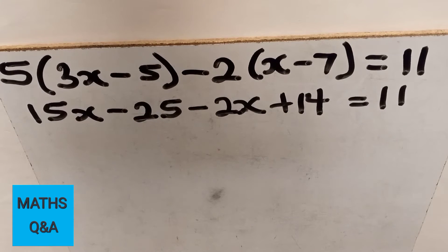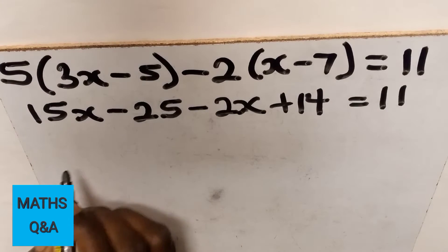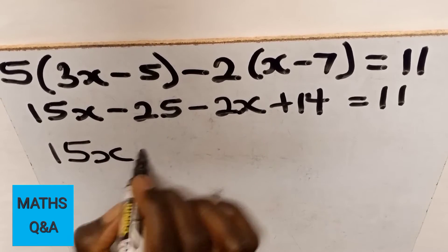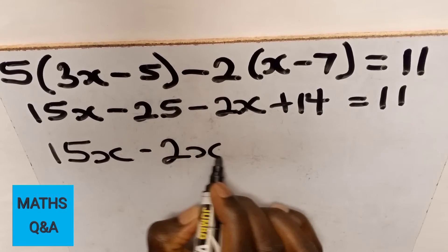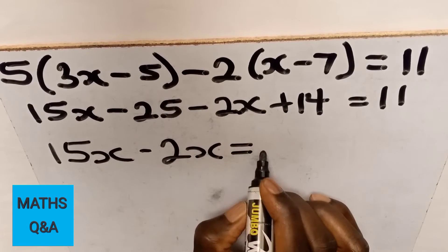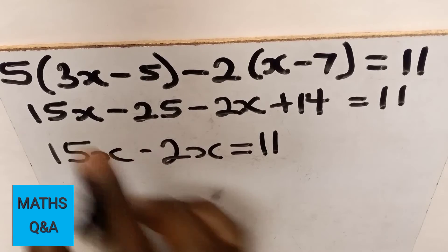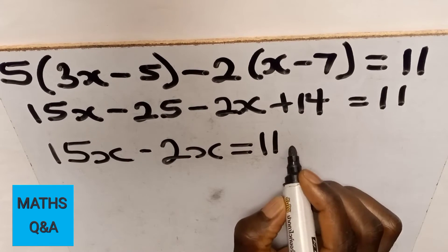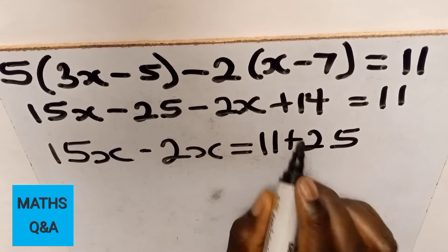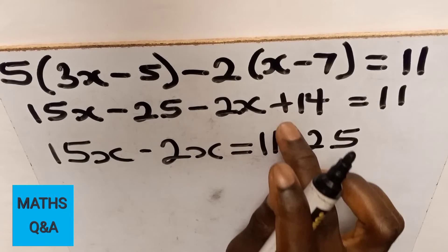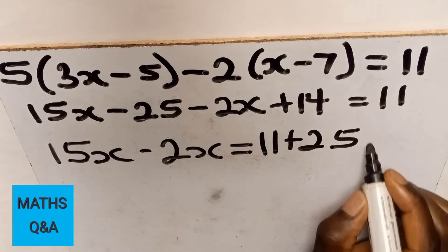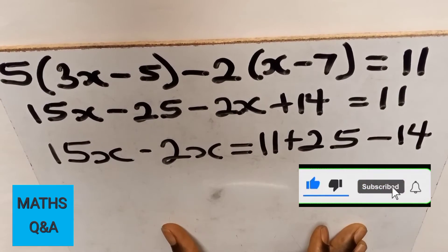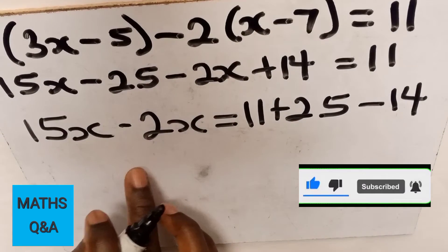I am maintaining those having the coefficient of x. So I have 15x minus 2x equal to, I have my 11 here. I'm sending my negative 25 to this side and that would be positive 25, and I'm sending the positive 14 to the right hand side that will become negative 14.